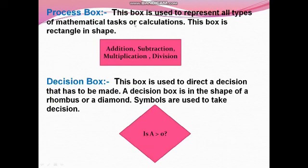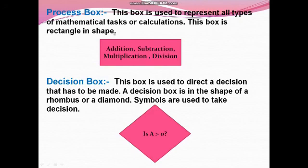Process box: this box is used to represent all types of mathematical tasks or calculations. This box is rectangle in shape. All types of mathematical operations — addition, subtraction, multiplication, division — are written in this rectangle box. Decision box: this box is used to direct a decision that has to be made. A decision box is in the shape of a rhombus or diamond. Symbols such as greater than, less than, and less than or equal to are used in decision boxes.